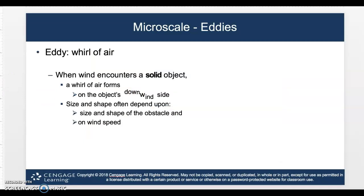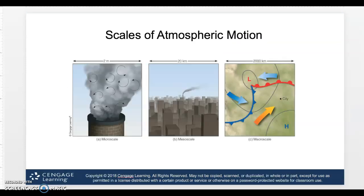When we talk about an eddy or a whirl of air that isn't on a very micro level, it's when wind encounters a solid object. A whirl of air forms on the object's downside. Let's take a look at this again.